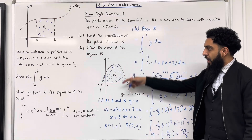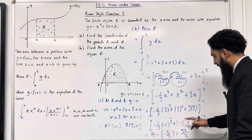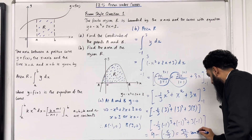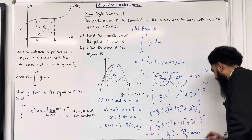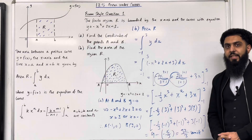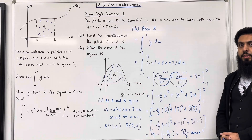So the shaded area R is 32/3 units squared. This completes exam-style question 1.